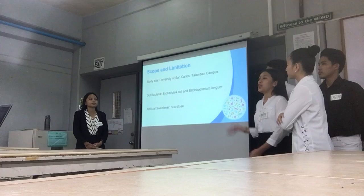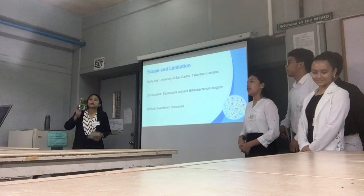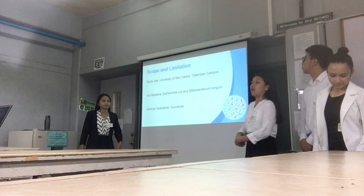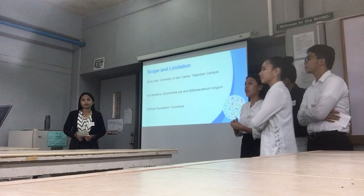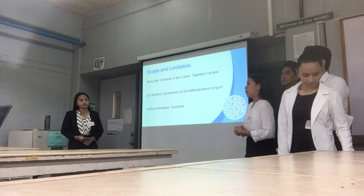For the scope and limitations, this study will be conducted at the University of St. Carlos, Lapulapu campus. The artificial sweetener to be used is sucralose, and the two species of gut bacteria to be used are Escherichia coli and Bifidobacterium. This study is limited only to the effects of different dosages of sucralose — specifically 0.005, 0.010, and 0.015 grams per unit of gut.